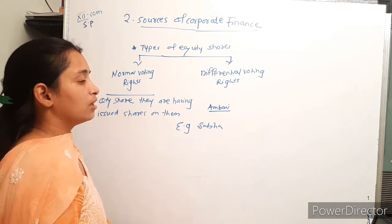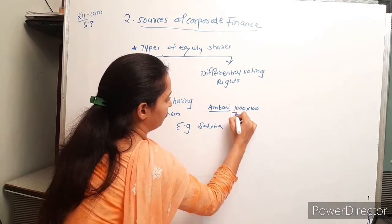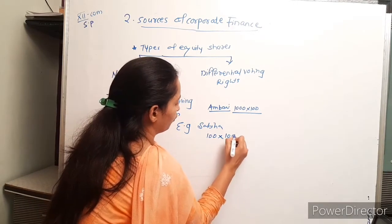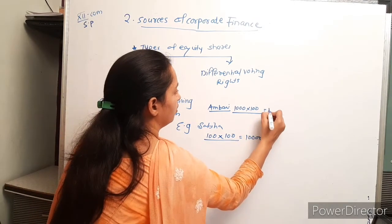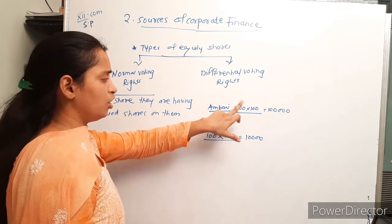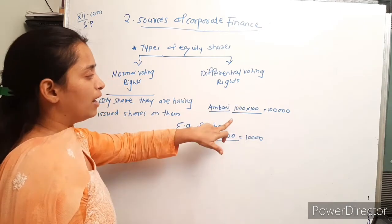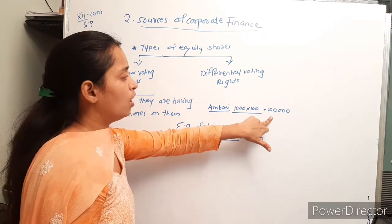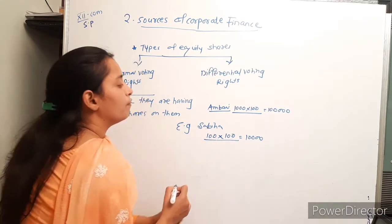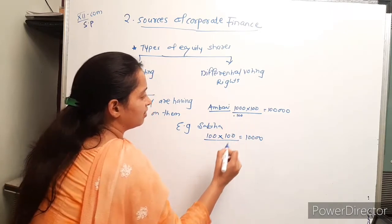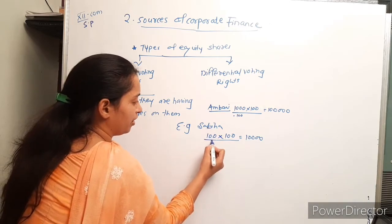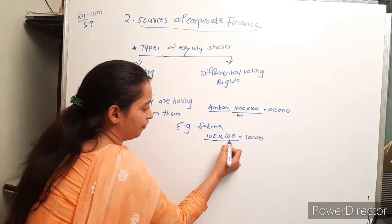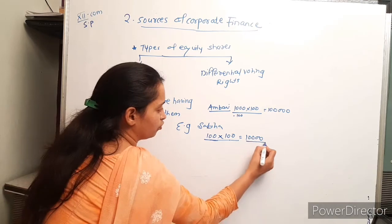Ambani issued 1000 shares. Myself, Samiha, I have purchased 100 shares at 100 rupees each, so I have invested 10,000 rupees total.